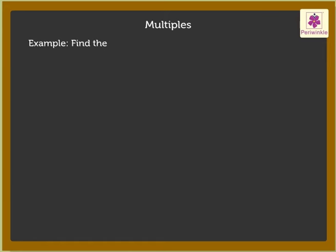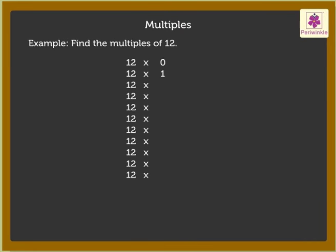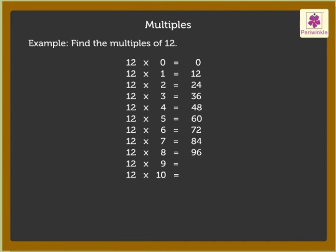Let us find the multiples of 12. It is easy. When we multiply 12 by 0, 1, 2, 3, 4, 5, 6, 7, 8, 9, 10, and so on, we get 0, 12, 24, 36, 48, 60, 72, 84, 96, 108, 120, and so on as the products. So, here, the products obtained are nothing else but the multiples of 12.